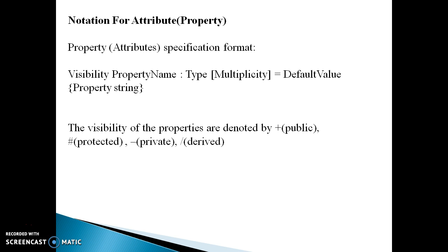Now the notations for declaring attributes. The format specification is: visibility, property name, colon, type, in square brackets multiplicity, equals default value, and in curly braces the property string. The visibility properties are denoted by plus for public, hash for protected, minus for private, and forward slash for derived attributes.